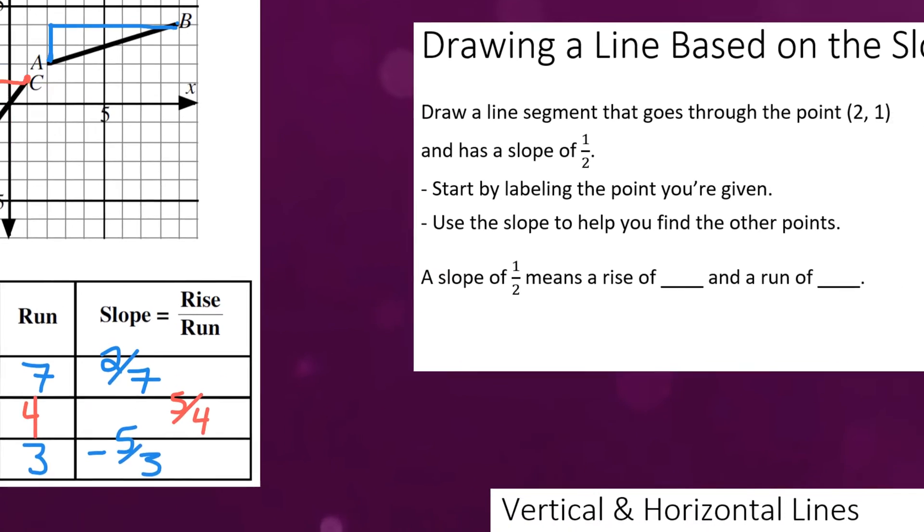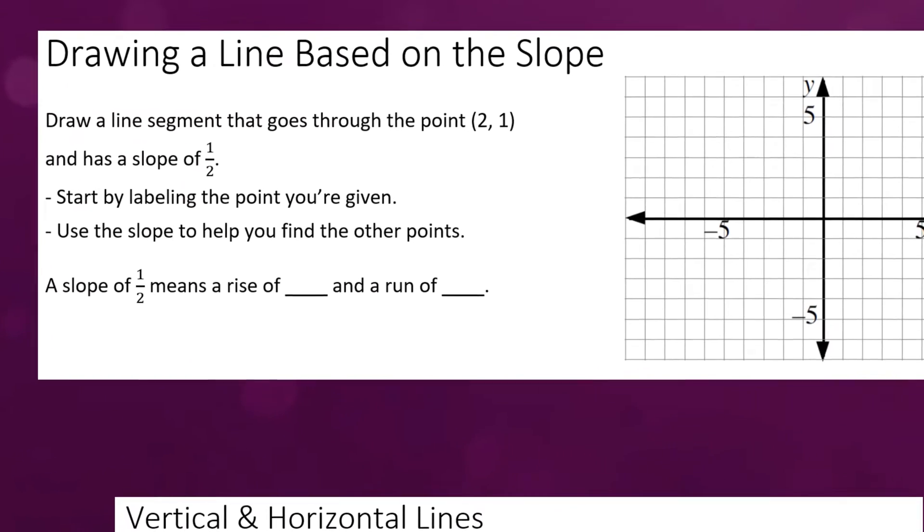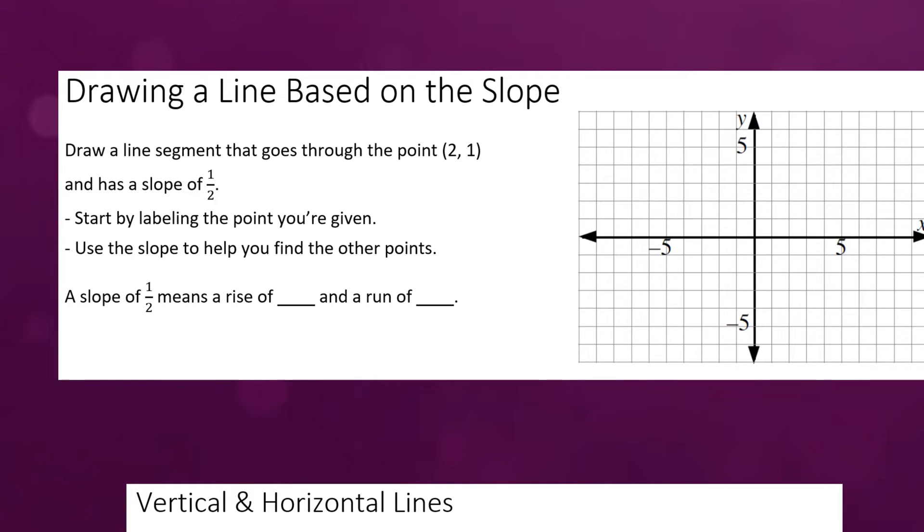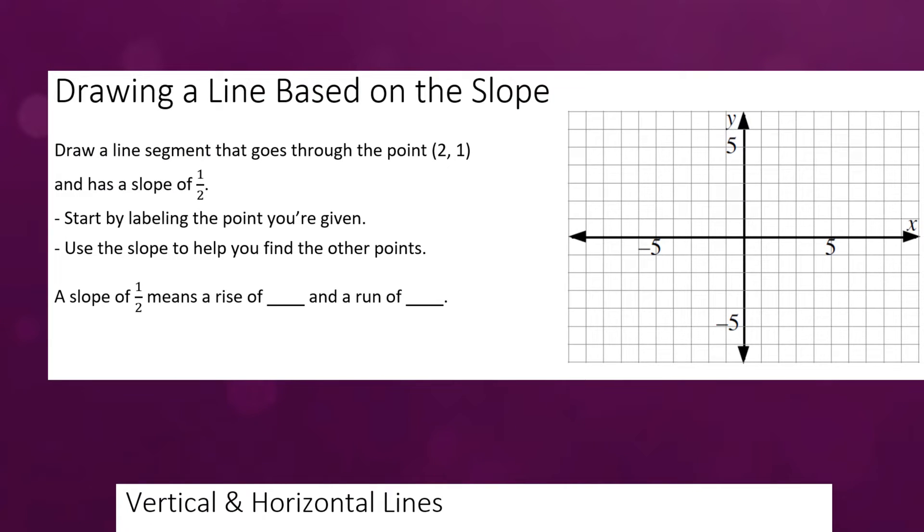Okay now one type of problem you might encounter is where you're given the slope of a line and you have to draw it on a Cartesian plane. So this is an example of that. The question says to draw a line segment that goes through the point (2, 1) and has a slope of one half. So to answer a problem like this we're going to start by actually labeling the point that we're given which is in this case two one. So (2, 1) would be located right there.